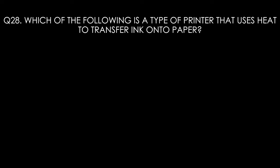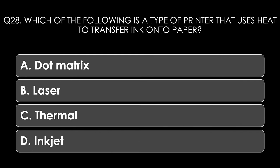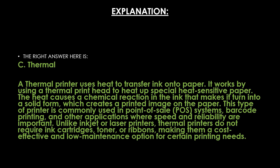Question twenty-eight. Which type of printer uses heat to transfer ink onto paper? Options: dot matrix, laser, thermal, or inkjet. The right answer is thermal. A thermal printer uses a thermal print head to heat up special heat-sensitive paper, causing a chemical reaction in the ink that turns it into a solid form creating a printed image. Thermal printers are commonly used in point-of-sale (POS) systems and barcode printing. Unlike inkjet or laser printers, they do not require ink cartridges, toner, or ribbons, making them a cost-effective, low-maintenance option.